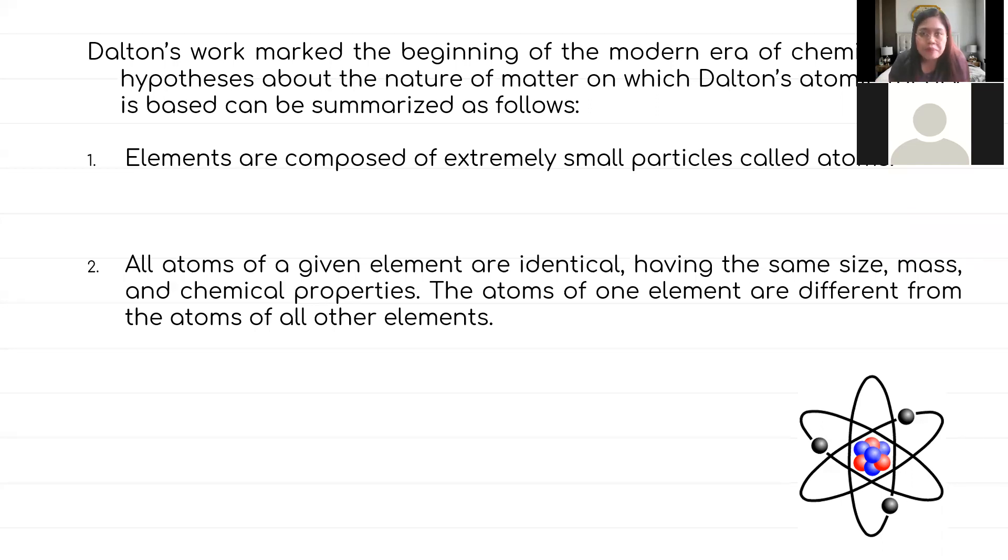Let us summarize the work of John Dalton. Number one, according to him, elements are composed of extremely small particles called atoms. The definition of atoms gave rise to the development and discovery of elements. This time, he called them atoms.